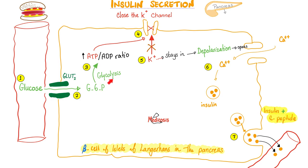Glucose-6-phosphate is trapped by glycolysis. The glycolysis pathway produces ATP, raising the ATP-to-ADP ratio. This energy closes the potassium channels — the normal function of the potassium channel was to let potassium out of the cell. Now with the channel closed, potassium can no longer leave. Potassium is a positive ion — a cation — causing positive depolarization of the calcium channel. This opens the calcium channel, and ionized calcium rushes into the beta cell. Calcium is the hero of contraction: the vesicle containing insulin contracts and ruptures, and insulin is released together with C-peptide.